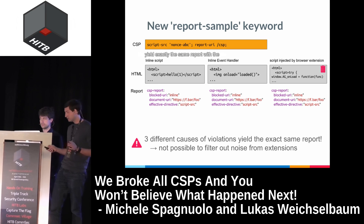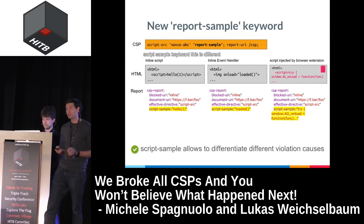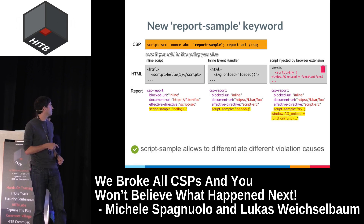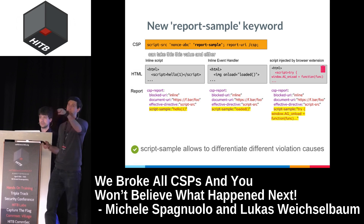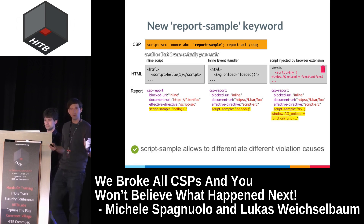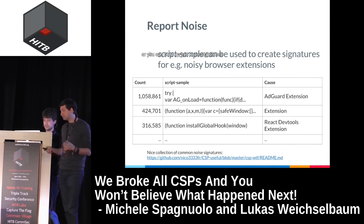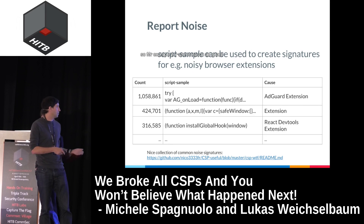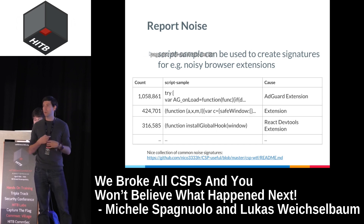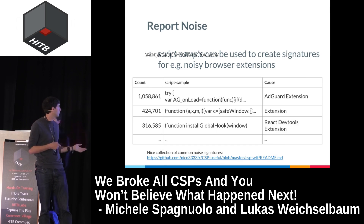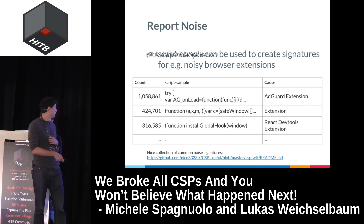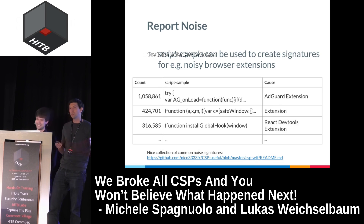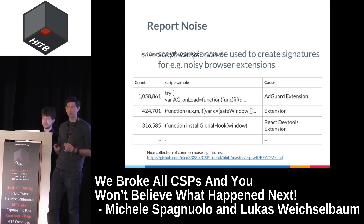With the script-sample keyword, you can take that value and search your codebase to confirm if it was your code, or build up signatures for common extensions that inject scripts. For example, AdGuard seems to inject scripts into every single page you visit, which alone accounts for one million noise reports. There's a nice GitHub page from nico3333fr that collects a lot of these signatures so you can filter your results and get actually useful CSP reports. This will hopefully be part of Chrome 59.